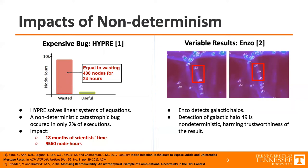In this software, there was a non-deterministic catastrophic bug which occurred in only 2% of executions. And if it were possible to run this quickly over and over, that wouldn't be too bad, but it took a couple of hours for this bug to actually manifest. The impact of this? It took 18 months of scientists' time and almost 10,000 node hours to get enough data to debug the problem.